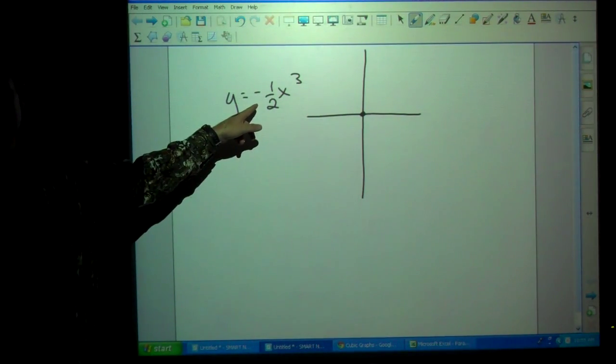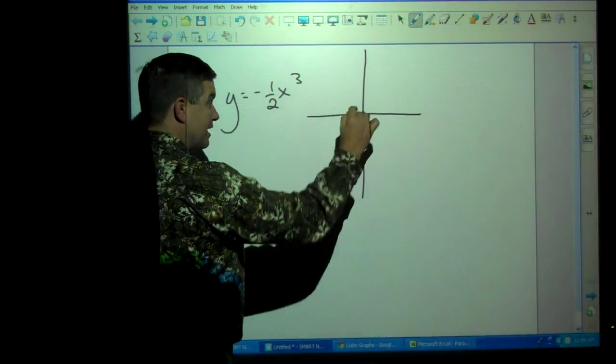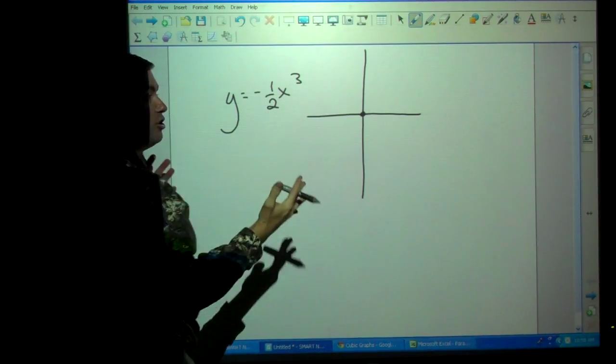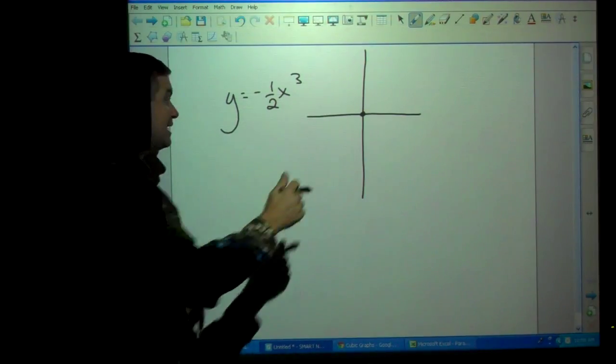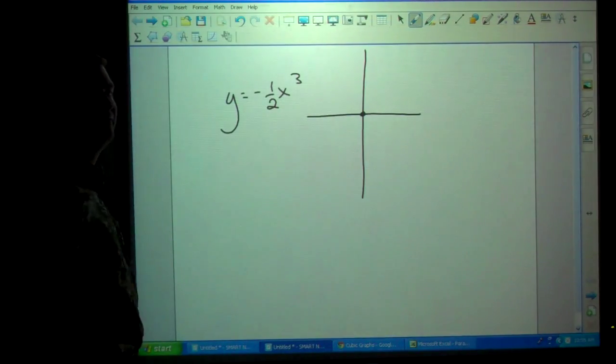So our turning point is at zero, zero. Right there. Alright. Now what? Now we look at A. What is A in this case? Negative one-half. So I know that it's going to go down over here and it's going to go up over here. Okay? I could do a small t-chart if I wanted to. But if I memorize that, then I don't have to fool with the t-chart. I know that every time it's negative, it's going to go down on the right, up on the left.